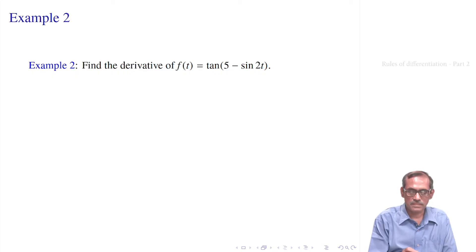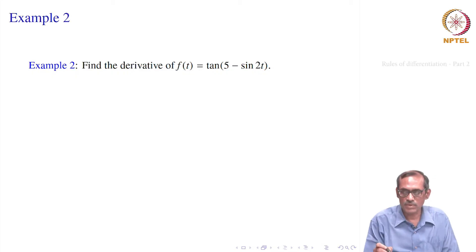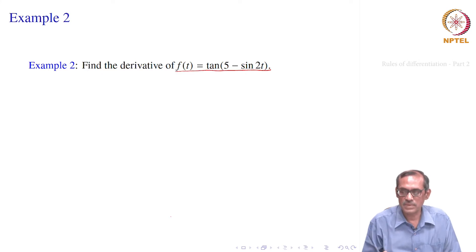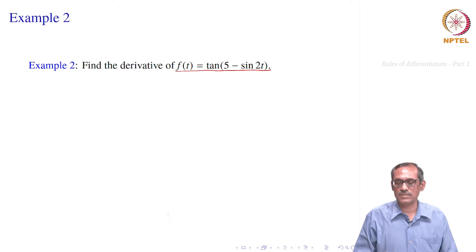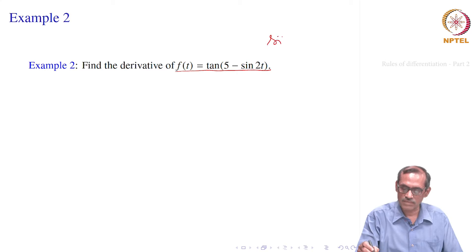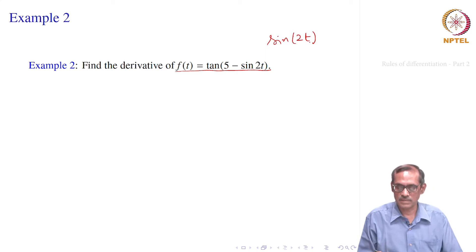Let us apply this. We want to find the derivative of the function f, where instead of x, it is written as t. f of t equals tan of 5 minus sin of 2t. So sin 2t means really sin of 2t — we write it as an abbreviation sin 2t.